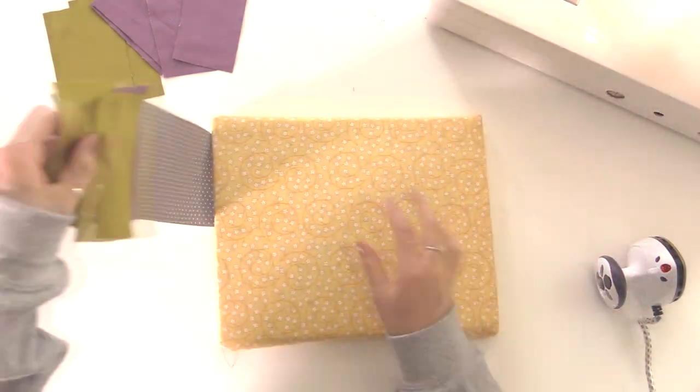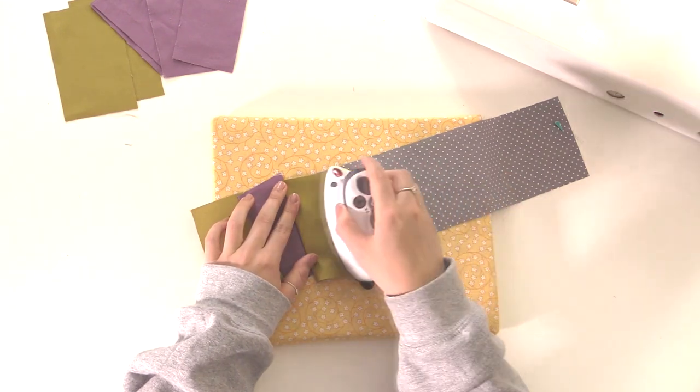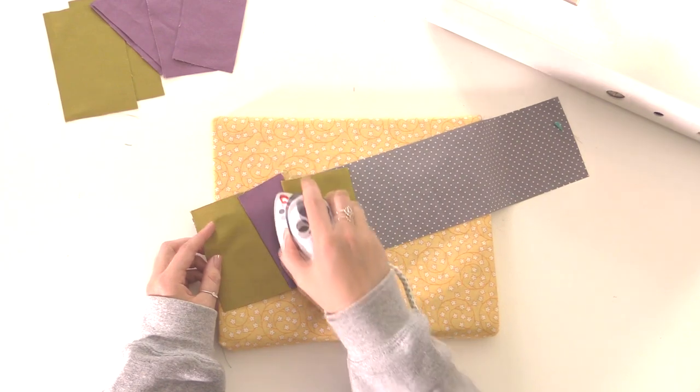Take your iron again, fold back the top piece and press. So keep repeating this process until your scrap piece is completely full of little pieces of fabric.